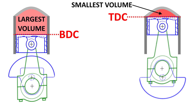This obviously means that your smallest volume practically equals the volume of your combustion chamber, which means that your compression ratio is strongly influenced by your combustion chamber volume.